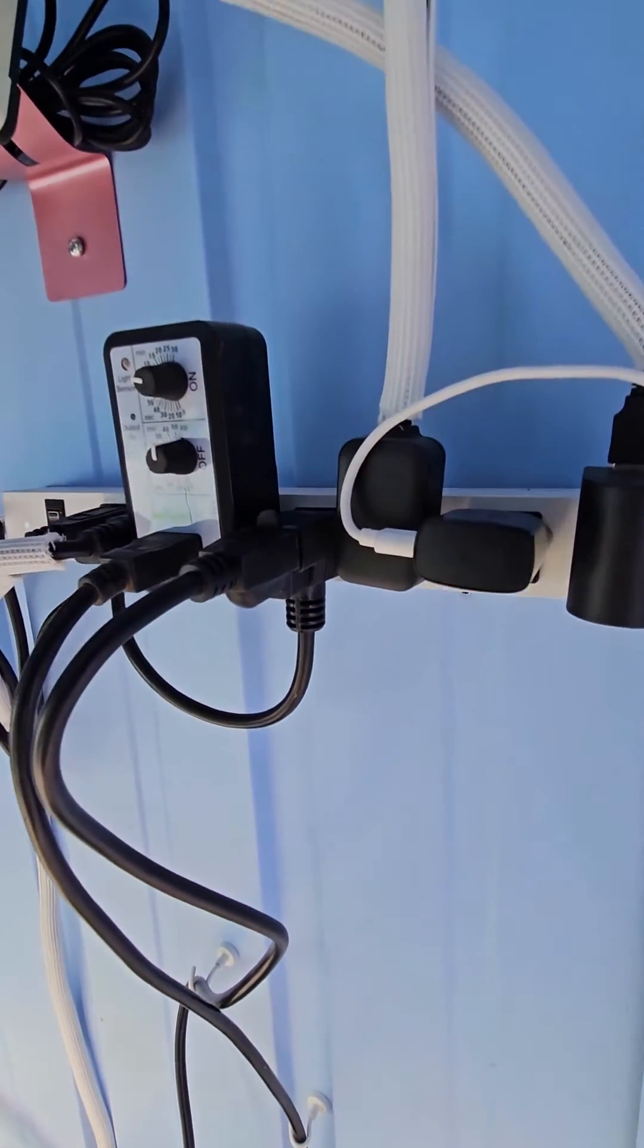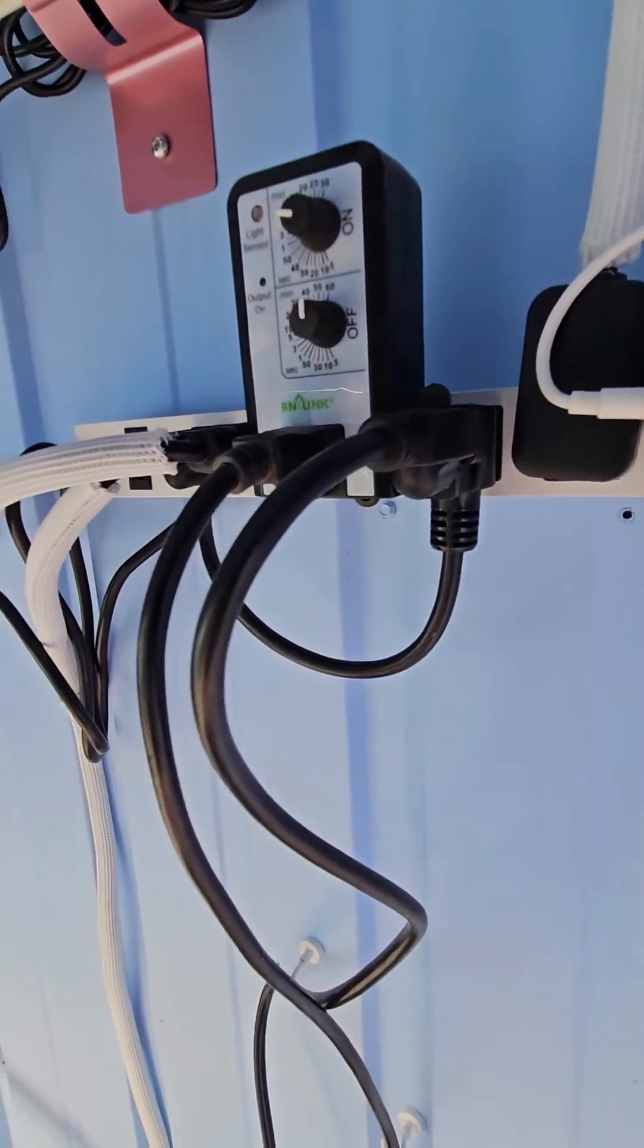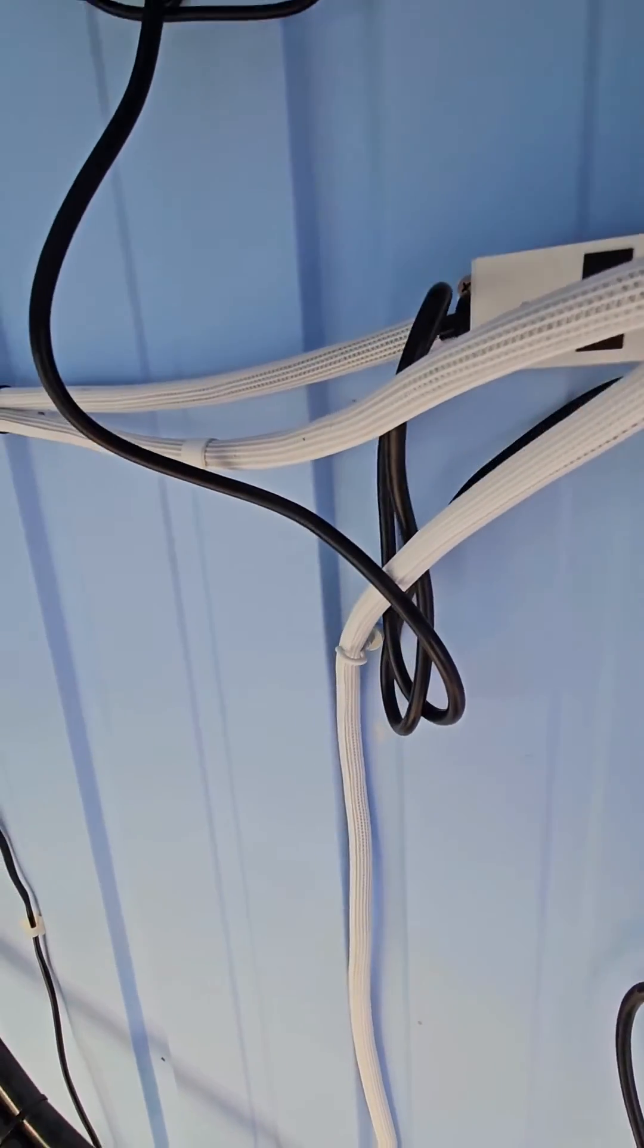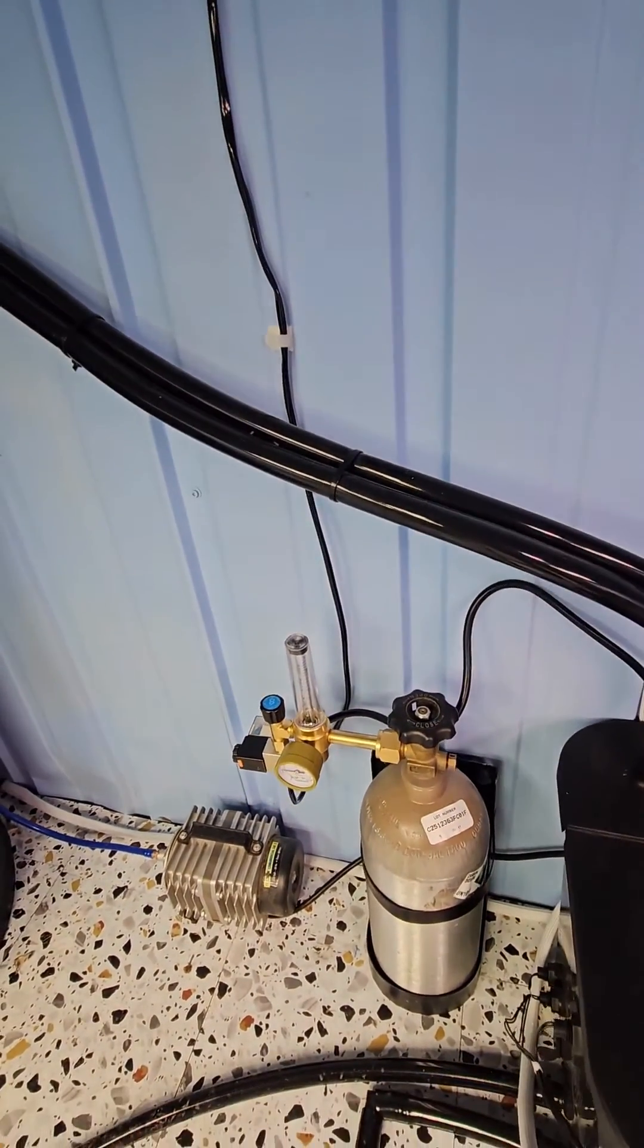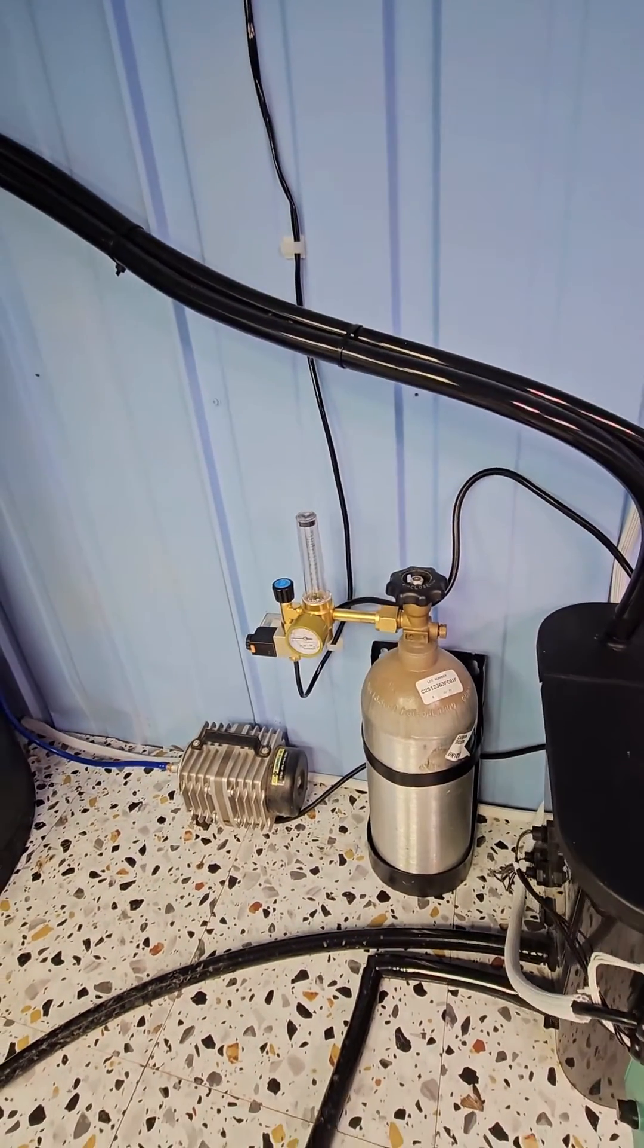The green meter plugs in and then the CO2 regulator plugs into the piggyback outlet on the green meter and controls and doses. This is a pretty slick setup and it's really easy to do.